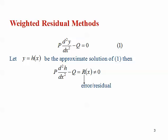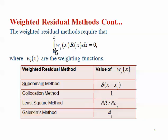Before proceeding, I will explain the Weighted Residual Method, since we are going to apply it here — though variational methods are also available. If this is a second-order differential equation and h(x) is the approximate solution, substituting h(x) for y gives a non-zero error called the residual. The aim is to minimize this residual. In the weighted residual method, you multiply the residual by some weight function and integrate over the entire domain from zero to L, making it zero in the weighted sense rather than directly setting the residual to zero.